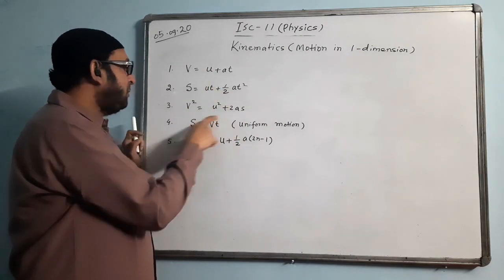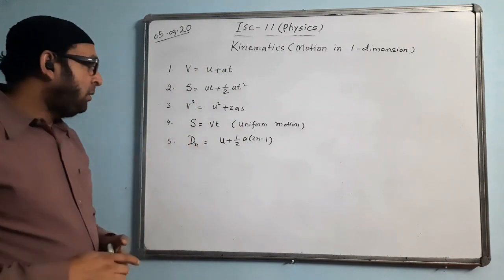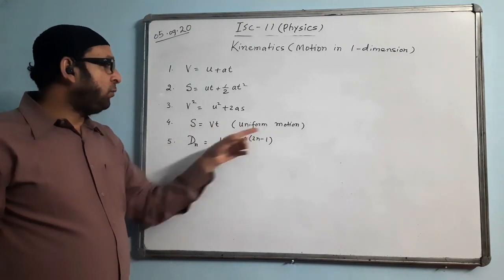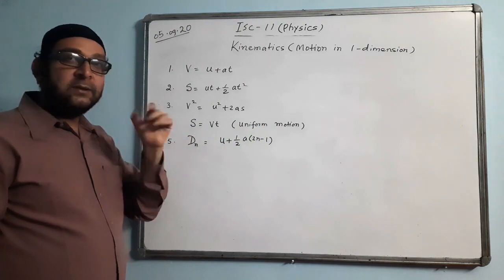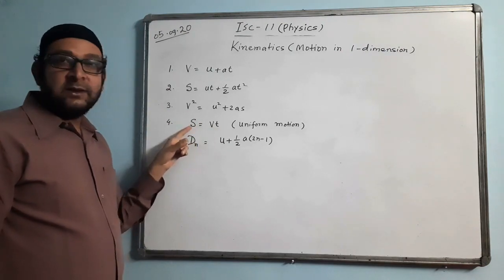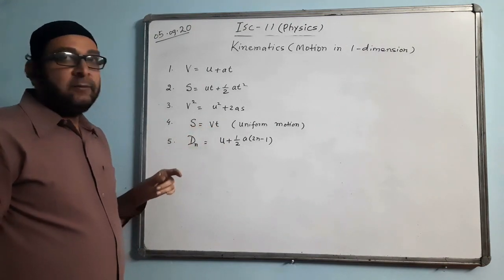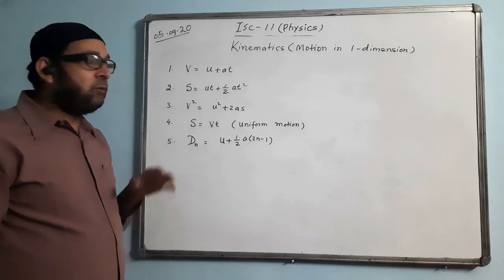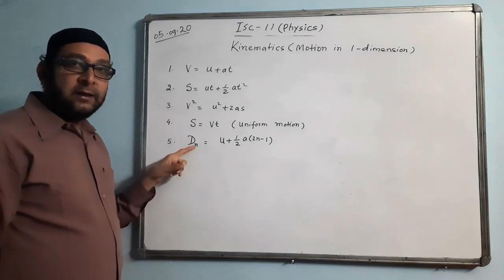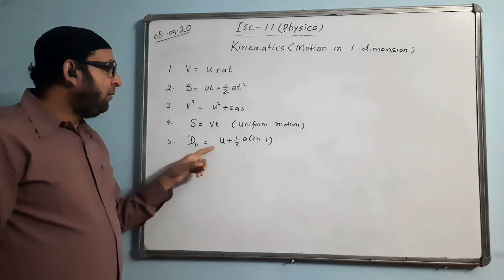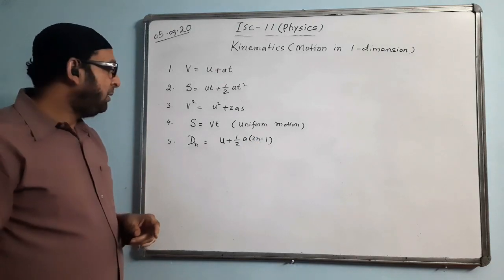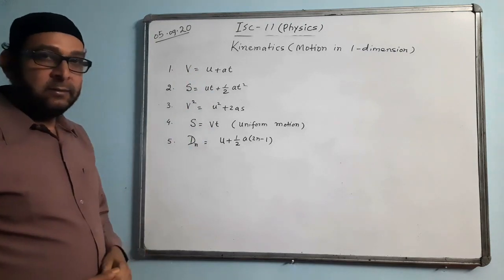The formula v² = u² + 2as you may already know. Two more formulas may be new to you. First: s = vt, which is only applicable for uniform straight-line motion where acceleration is zero and velocity is constant, so s equals velocity into time. The last formula is called distance moved by the body in the nth second of time: u + ½a(2n − 1), where n is the nth second.